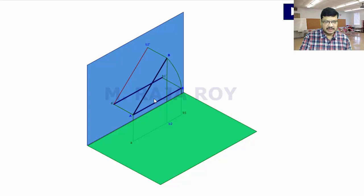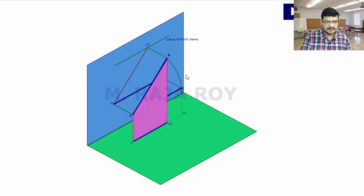Once you give the inclination with respect to VP, when the line is making some angle with respect to HP, the line passing through B2' is called the locus of front views, because the final front view lies on this line only. To prove this, I will consider a plane passing through A, B, B2, and A. Whatever may be the angle with respect to VP, the final front view B' will come on to this line only.